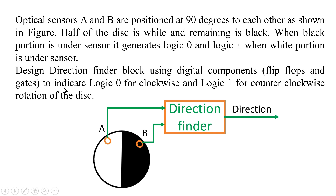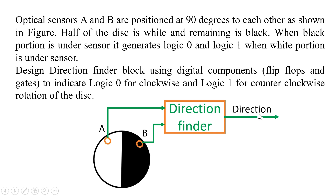You have to design a direction finder block using digital components — flip-flops and gates — to indicate logic 0 for clockwise and logic 1 for counterclockwise rotation of the disk. For example, if the disk is rotating in a clockwise direction, the direction finder should give logic 0; but if it is rotating in an anticlockwise direction, the direction finder should give logic 1.